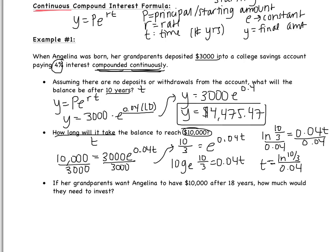Be careful putting this in your calculator — you're taking the natural log of 10 divided by 3, so make sure you close the parentheses before dividing by 0.04. When I did this, I got T equal to 30.10 years. So if her grandparents deposit $3,000, it will take about 30 years before she will have $10,000. Remember, that $7,000 is just from interest.